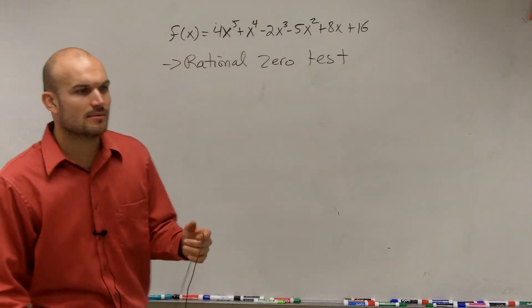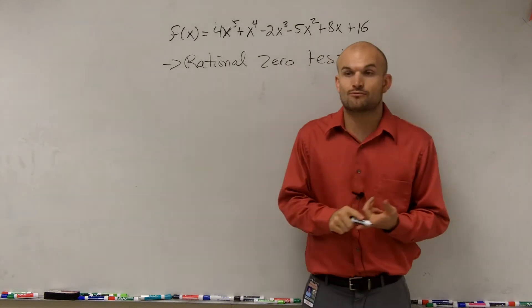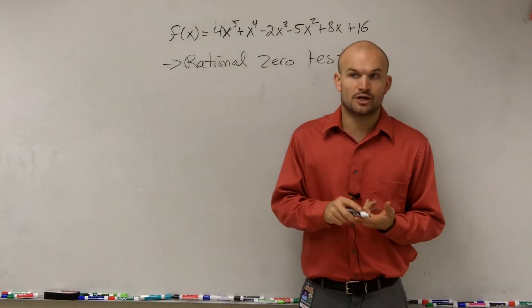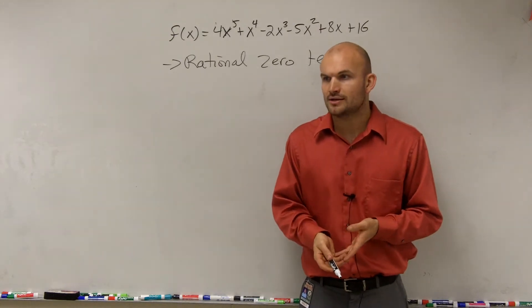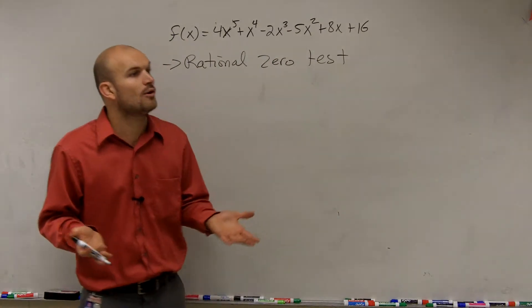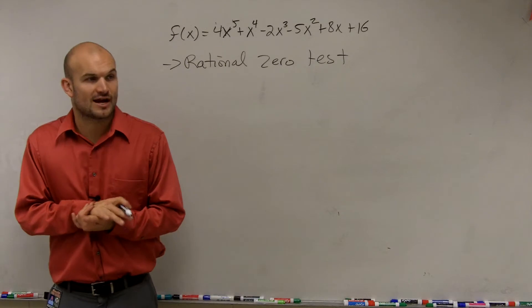So remember when we were talking about rational zeros, well when we were talking about describing our zeros, we had rational, irrational, and real or complex. So rational numbers are just going to be, remember, all numbers that we can write in fractional form. They're not going to be irrational, they're going to be numbers that we can write in fractional form.